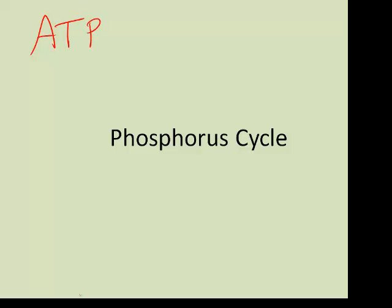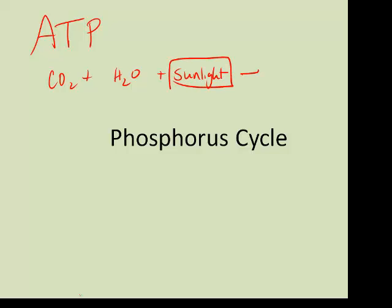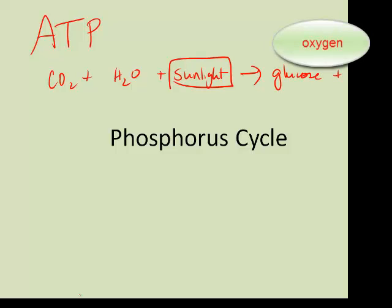We mentioned this in an earlier video. When plants do photosynthesis, they basically take carbon dioxide and water, plus sunlight, and they're converting the sun's energy into chemical energy in the form of glucose and oxygen, which other living things can use. And what do they use it for? They use it for cellular respiration.